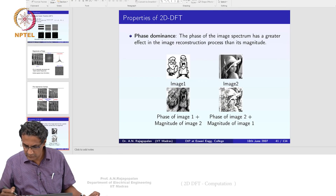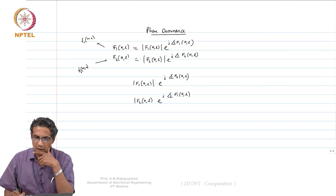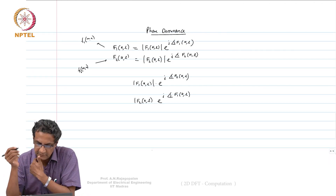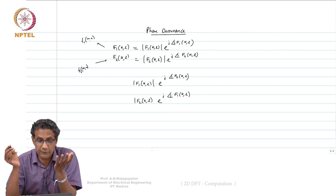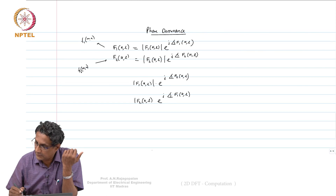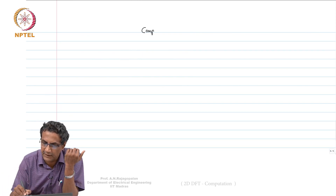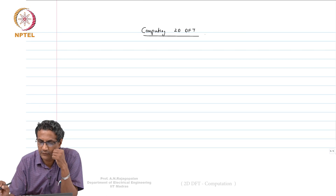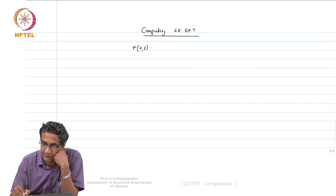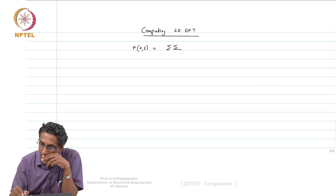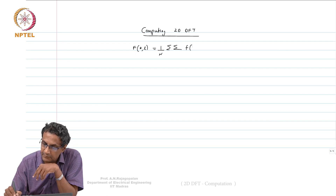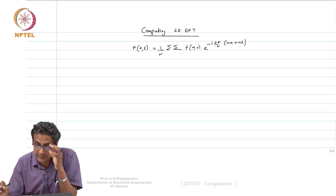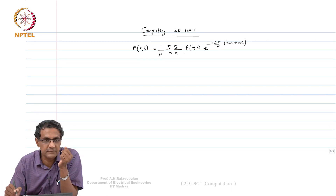Moving forward, I wanted to talk about how fast you can actually do the computation. When you compute F of KL, a 2D DFT, you look at the summation: F of KL involves a double sum of F of MN times e raised to minus j 2 pi over N times NK plus NL, if it is rectangular. We will just stick to something simple.